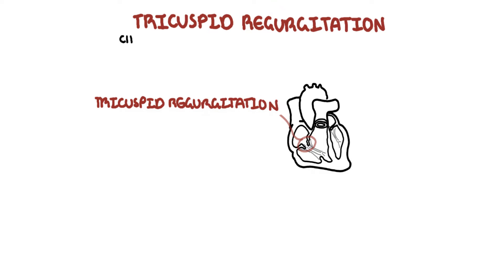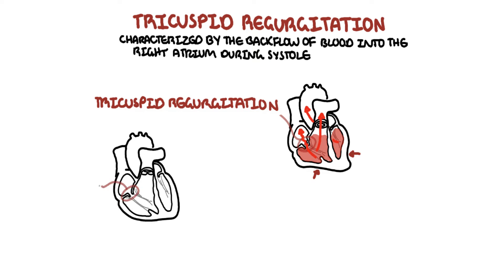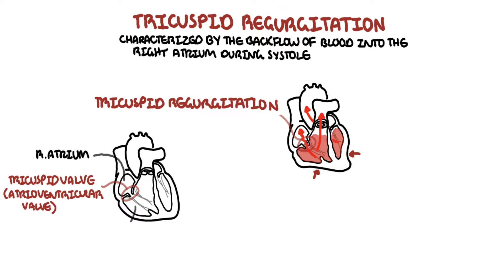Tricuspid regurgitation is characterized by the backflow of blood into the right atrium during systole. The tricuspid valve is an atrioventricular valve which prevents blood from flowing from the right ventricle to the right atrium. The other atrioventricular valve is the mitral valve.